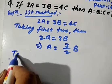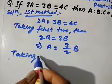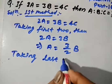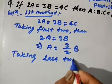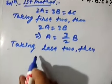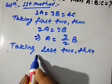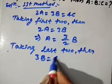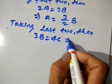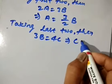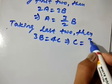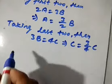Now taking the last two parts: 3b = 4c. From this we get the value of c, which is equal to 3/4 × b.